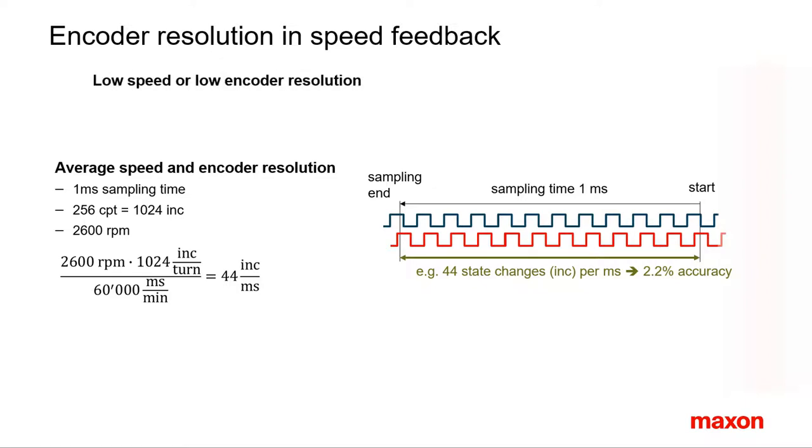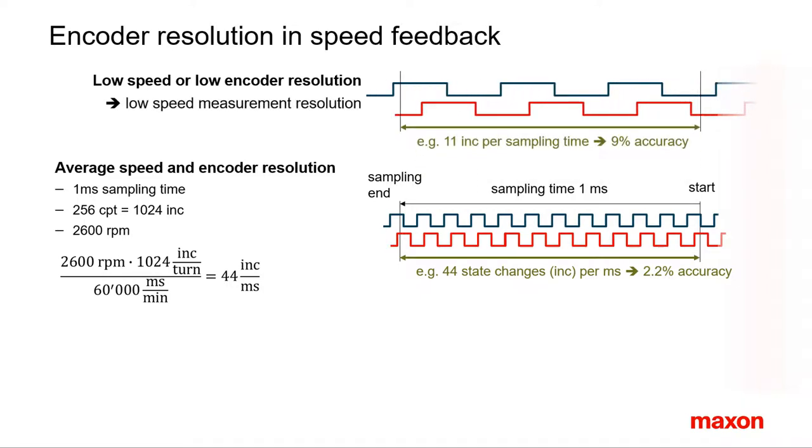The situation looks different at low speeds or at lower encoder resolution, however. In the same millisecond, there are fewer increments. The resulting speed resolution is still one increment per millisecond, but this corresponds now to about 9%.